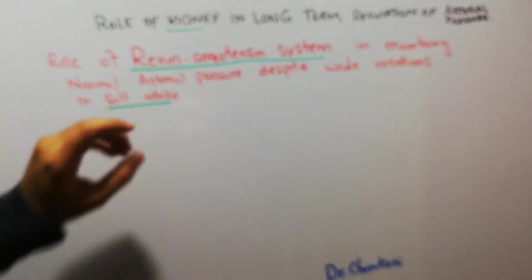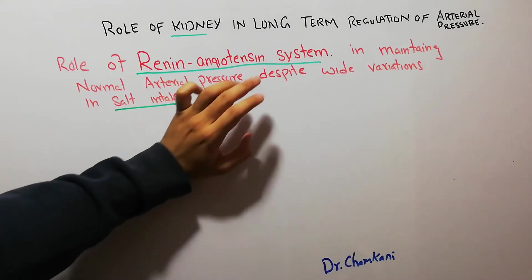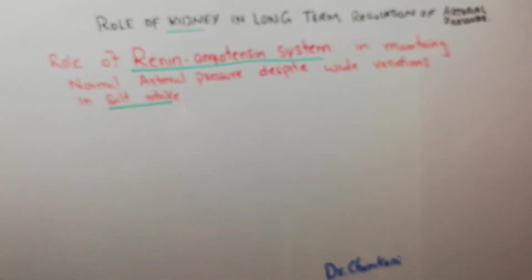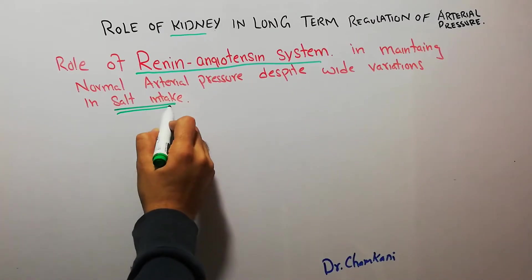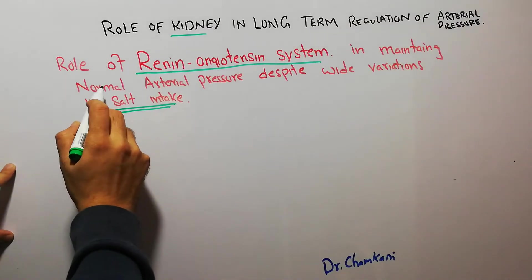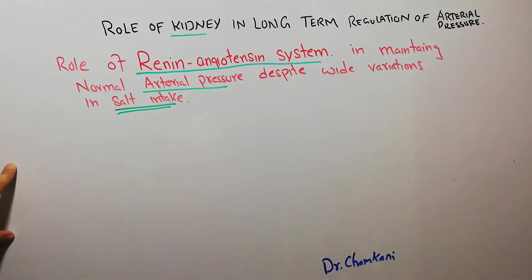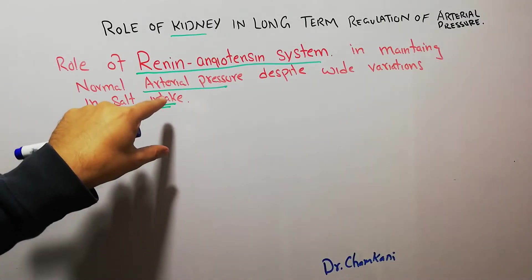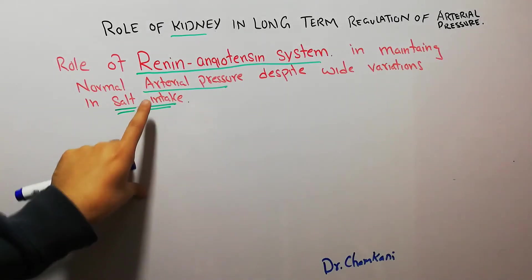One important characteristic of the renin angiotensin system is that it allows a person to increase or decrease the intake of salt and at the same time keep normal arterial pressure. Now let's look at how the renin angiotensin system helps in maintenance of normal arterial pressure despite variation in salt intake.